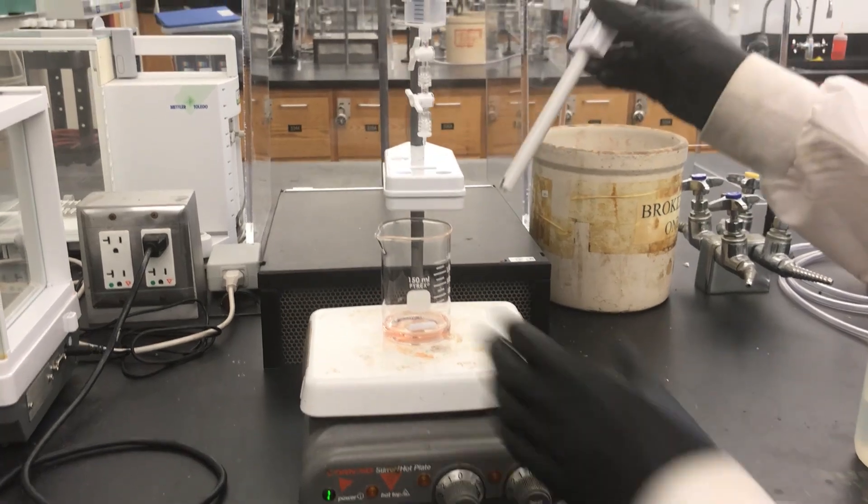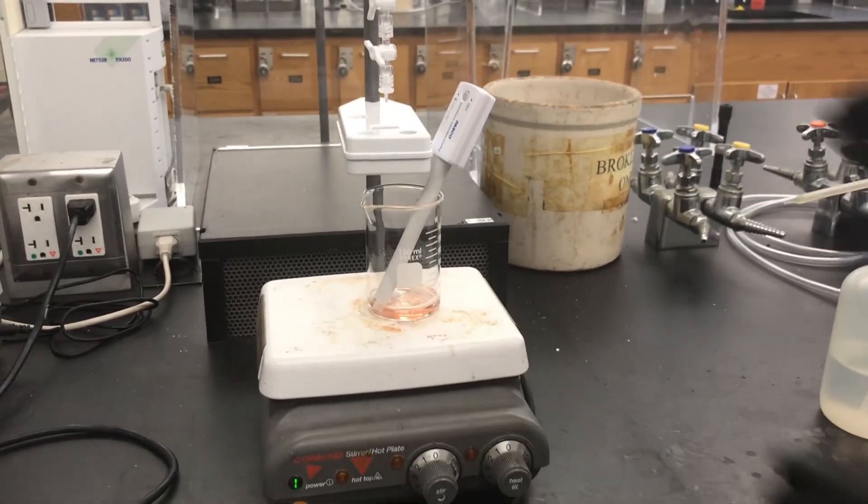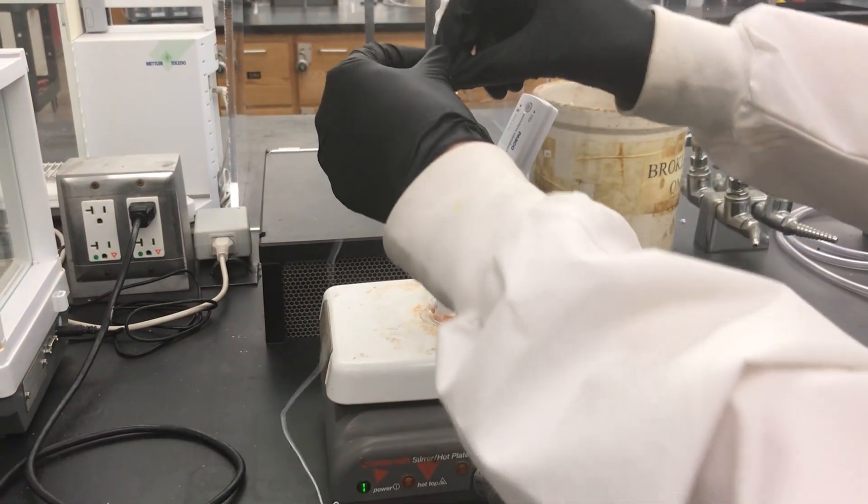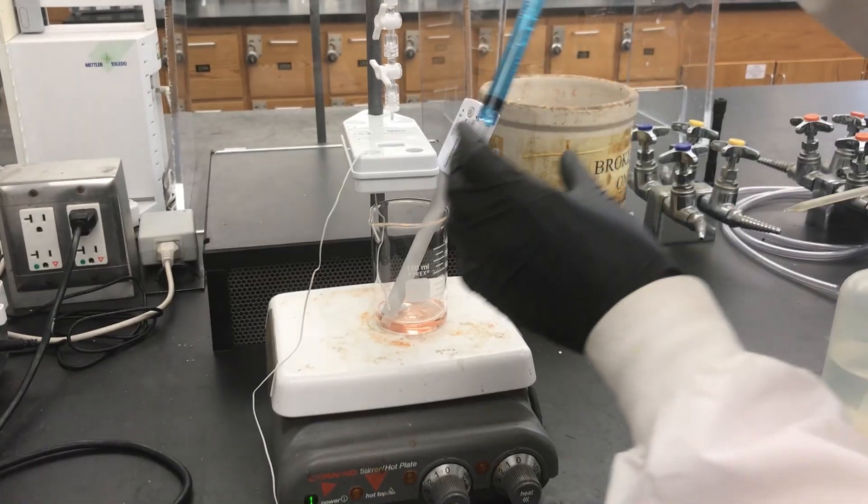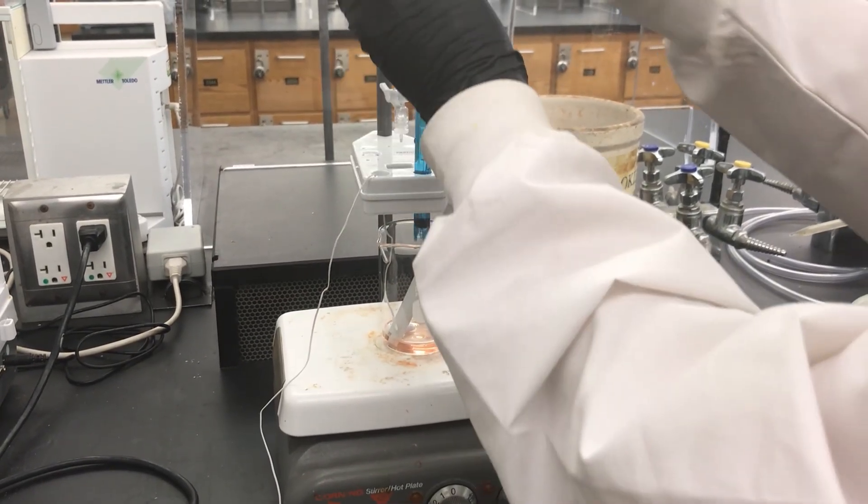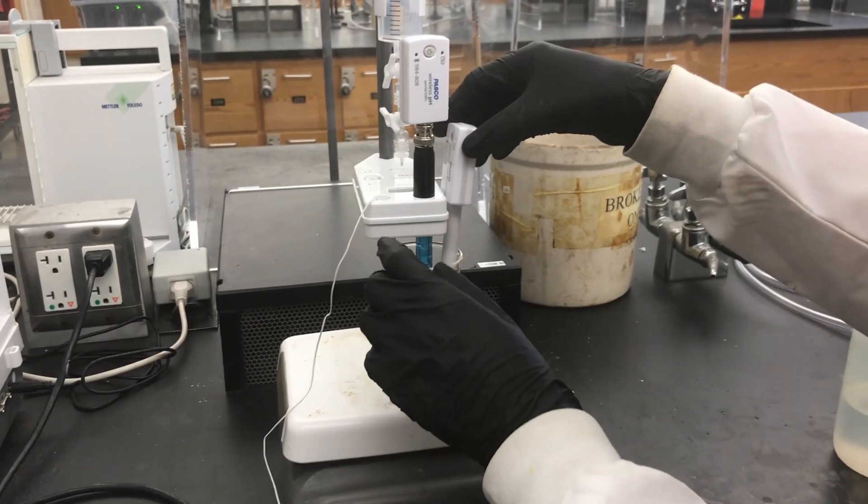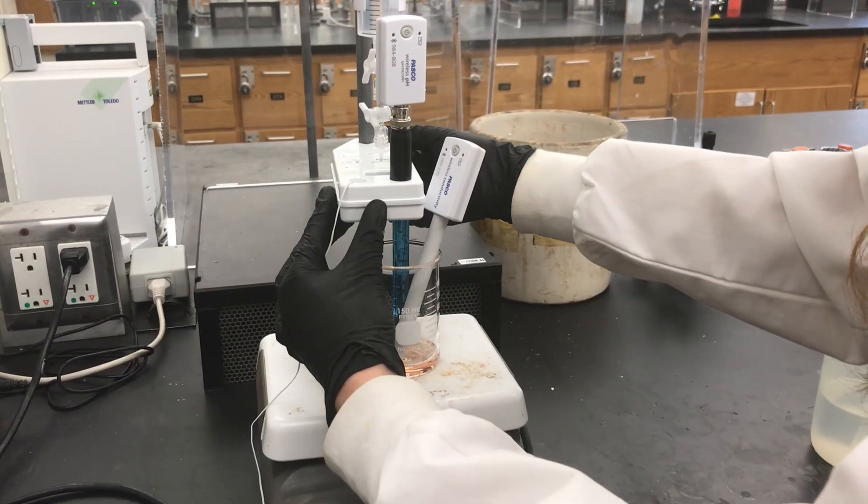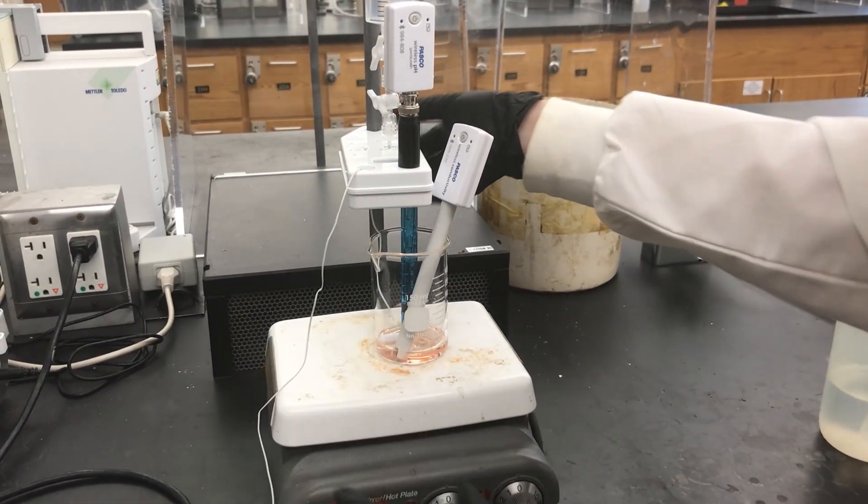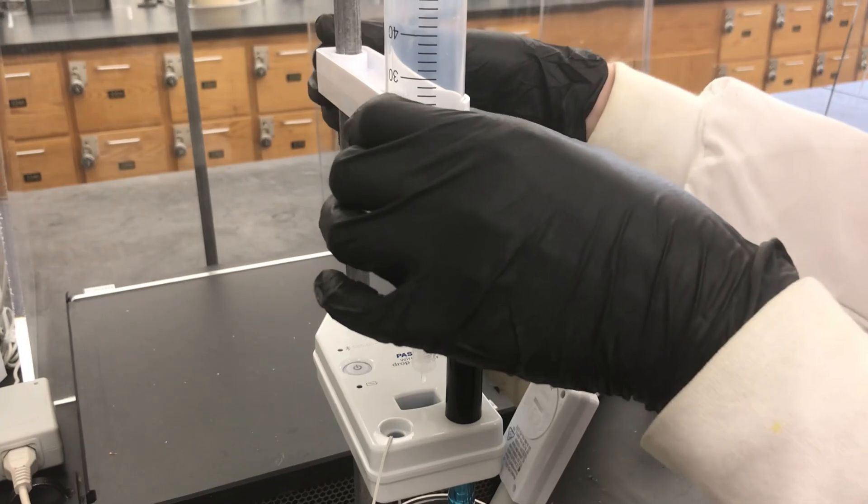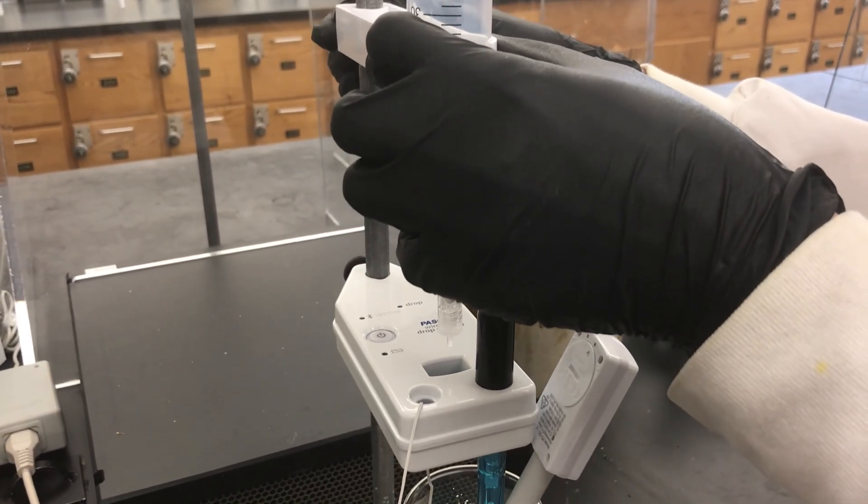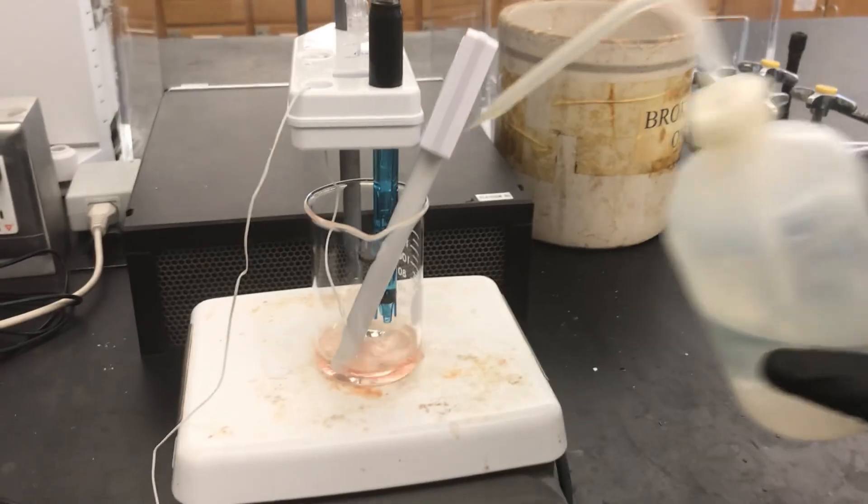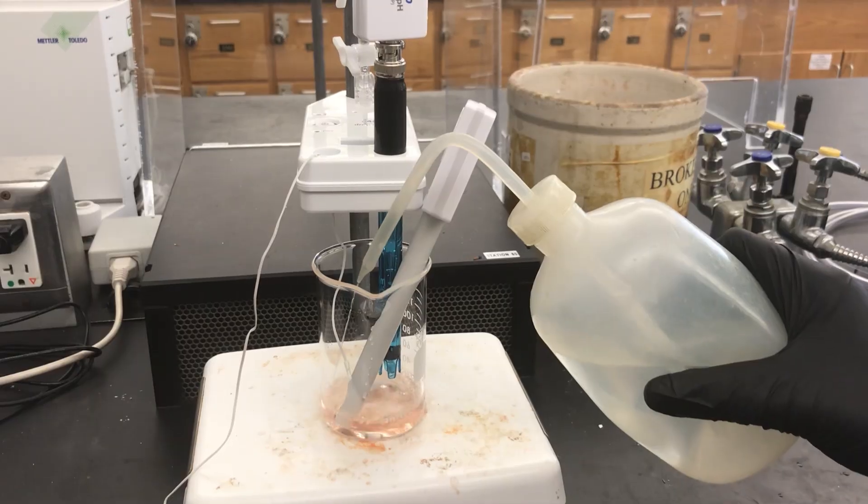Now we're going to position and adjust all of the probes. Place the conductivity meter straight into the beaker. Lean it against the side of the beaker out of the way of the stir bar. Place the temperature sensor through the small hole on the front of the drop counter. Then place the pH meter through the large hole on the front of the drop counter and adjust the height of the drop counter so that the sensors are as close to the bottom of the beaker as possible without touching the stir bar. Finally, adjust the drop dispenser so that the stopcock is about one centimeter above the drop counter.